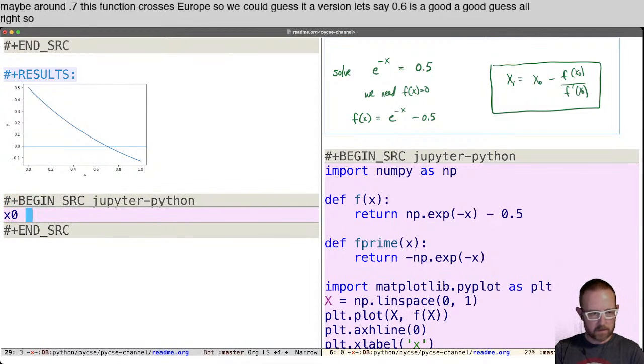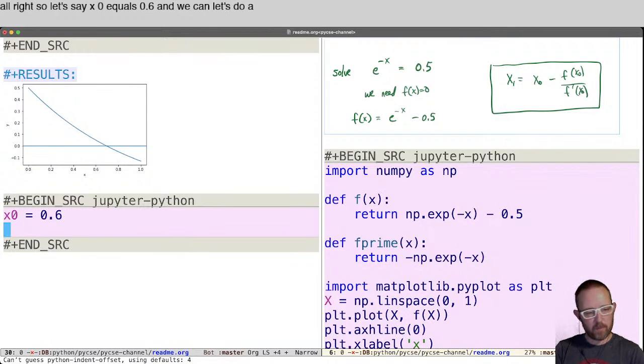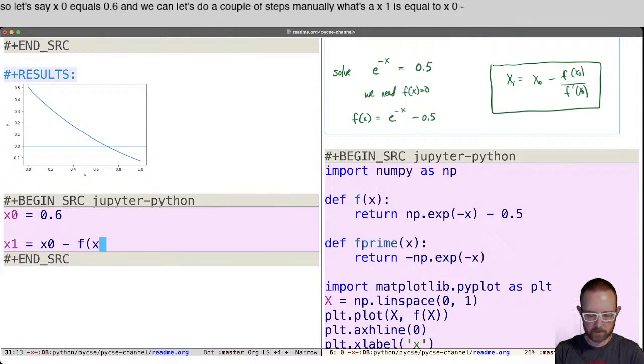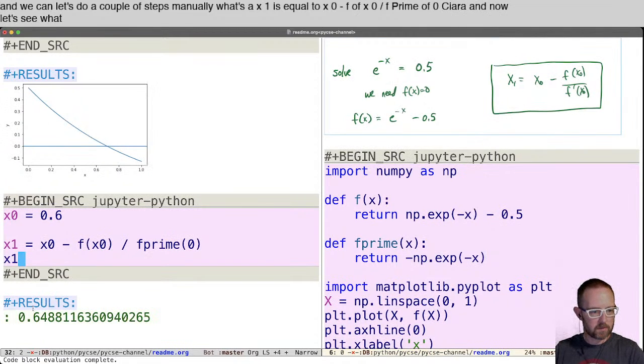So let's say x0 equals 0.6. And let's do a couple of steps manually. Let's say x1 is equal to x0 minus f of x0 divided by f prime of 0. And now let's see what x1 is. It gets a little bit closer.